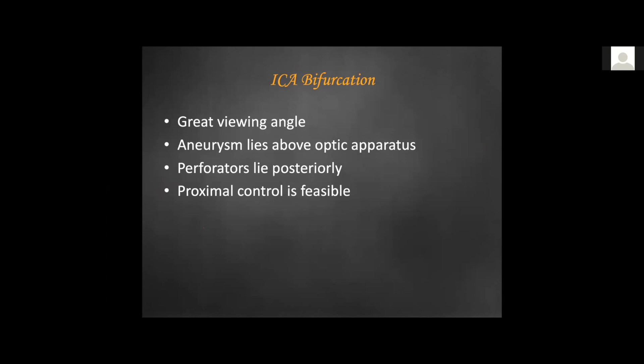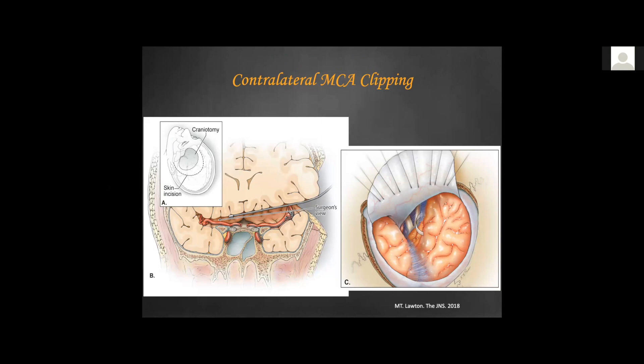For ICA bifurcation aneurysms approached contralaterally, there is a great view and working angle; the aneurysm lies above the optic apparatus, perforators likely lie posteriorly, and proximal control is visible.